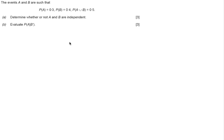We are told the events A and B are such that the probability of A is 0.3, probability of B is 0.4, and the probability of A union B is 0.5. It asks us to determine whether or not A and B are independent.